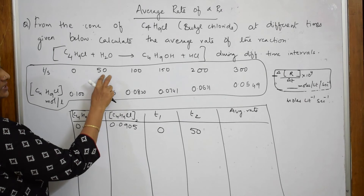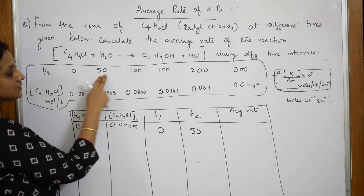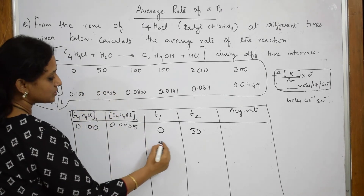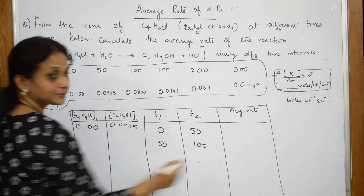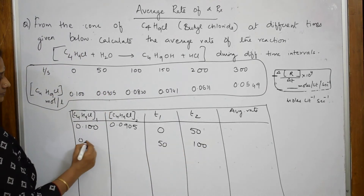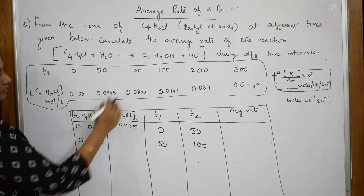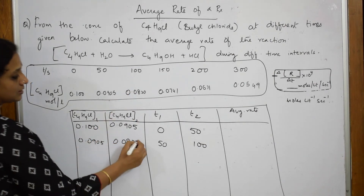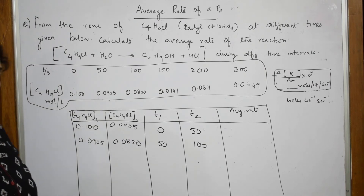For the second interval, I am going to compare between this time interval and this time interval. For the second time, this becomes T1 and this becomes T2. So this becomes 50 and this becomes 100. For 50, how much is the concentration? — 400. So this is how we are going to do it.